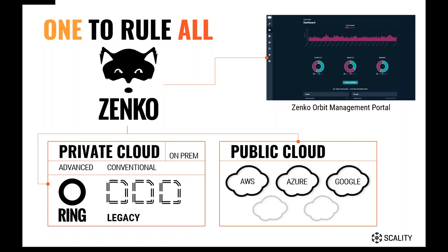And that's where Zanco comes in. Zanco sits above your private cloud resources, such as Scality Ring, as well as more legacy on-prem conventional storage products like a NAS solution, and also any public cloud provider — AWS, Azure, Google, and many more. Zanco makes all of those storage locations manageable through a single user interface, which is the Zanco Orbit Management Portal, which I'll show you in the demonstration today.